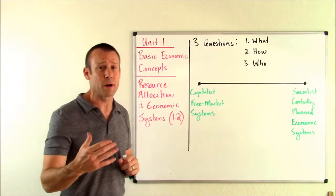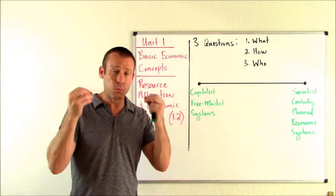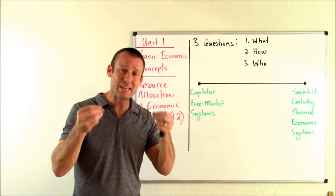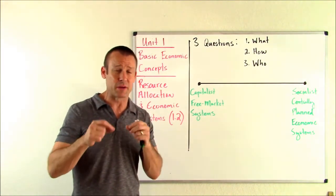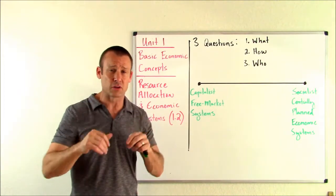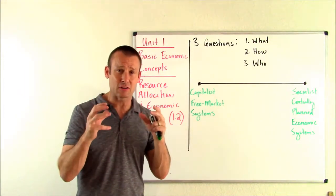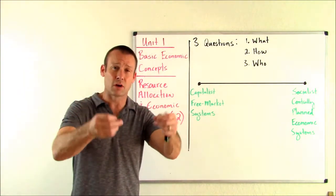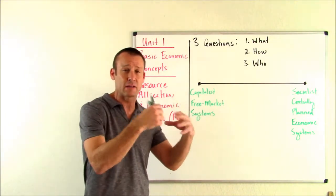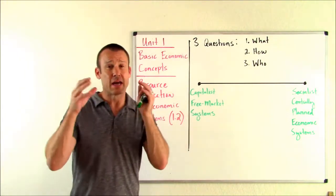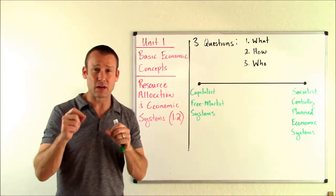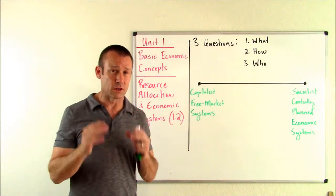Now, free market systems, what we're talking about there is, in a free market system, we have decentralized actors, okay? Meaning, they're not coordinating with each other. So, decentralized actors acting in their own self-interest. That's right. On the supply side, decentralized actors acting in their own self-interest. And on the demand side, decentralized actors acting in their own self-interest.